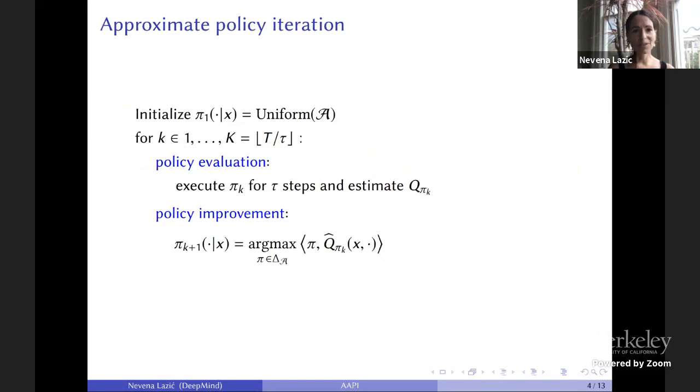It's best to first describe the vanilla version of approximate policy iteration. It alternates between a policy evaluation stage and a policy improvement stage. In policy evaluation, you execute the current policy for some number of steps and estimate its Q function. In policy improvement, you set the next policy to be greedy with respect to that Q function estimate. If these Q functions are exact with no error, this is guaranteed to converge to the optimal policy. But with function approximation, this tends to work poorly in practice and isn't even guaranteed to converge.